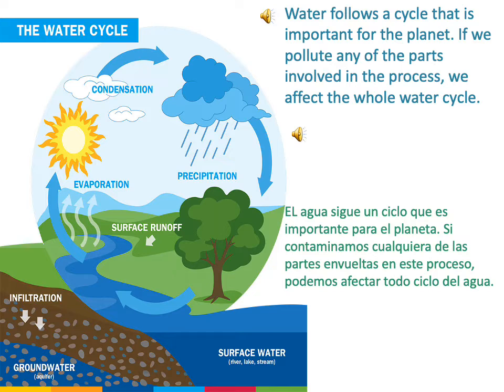The cycling of water in and out of the atmosphere is a significant aspect of the weather patterns on Earth.